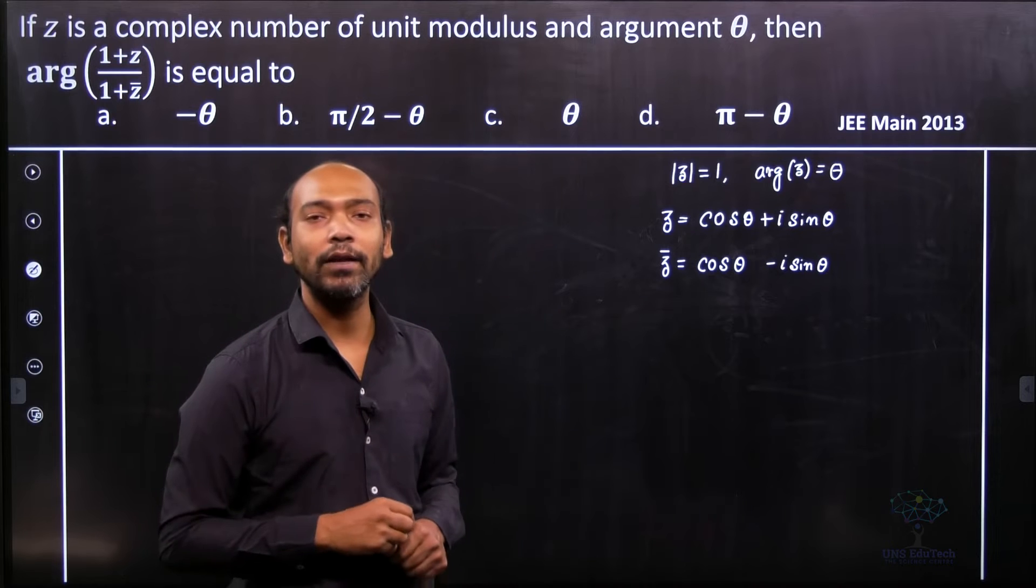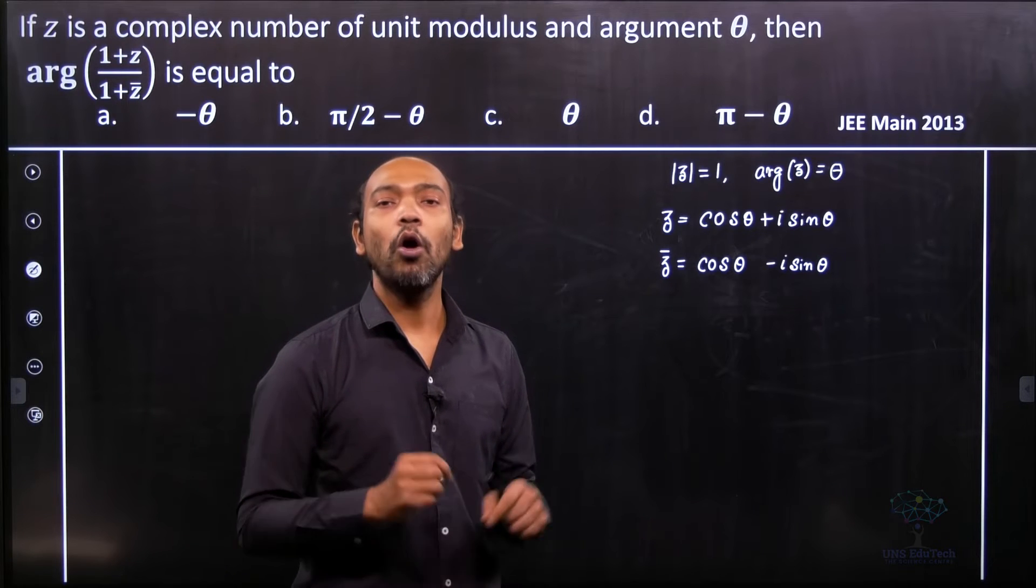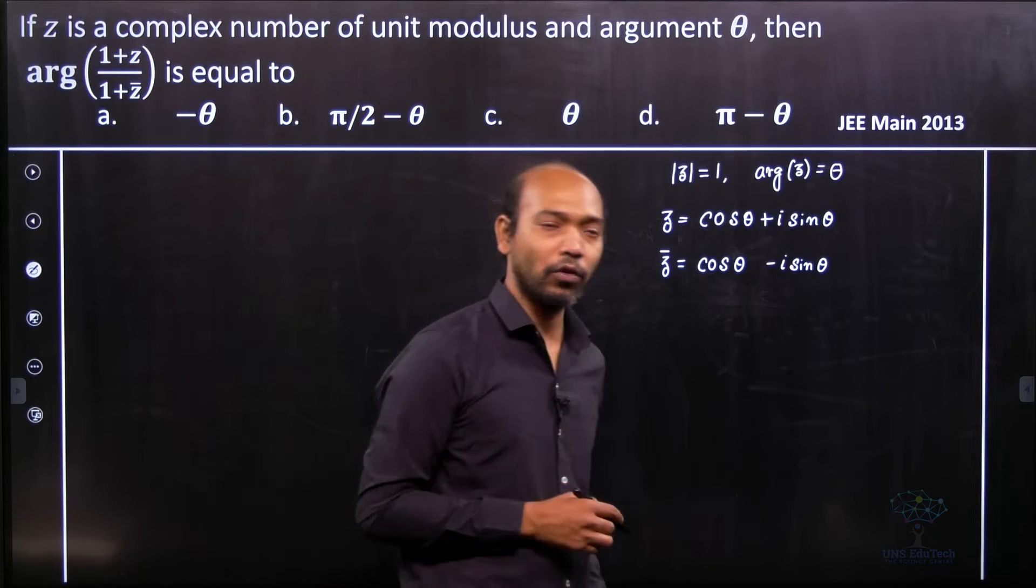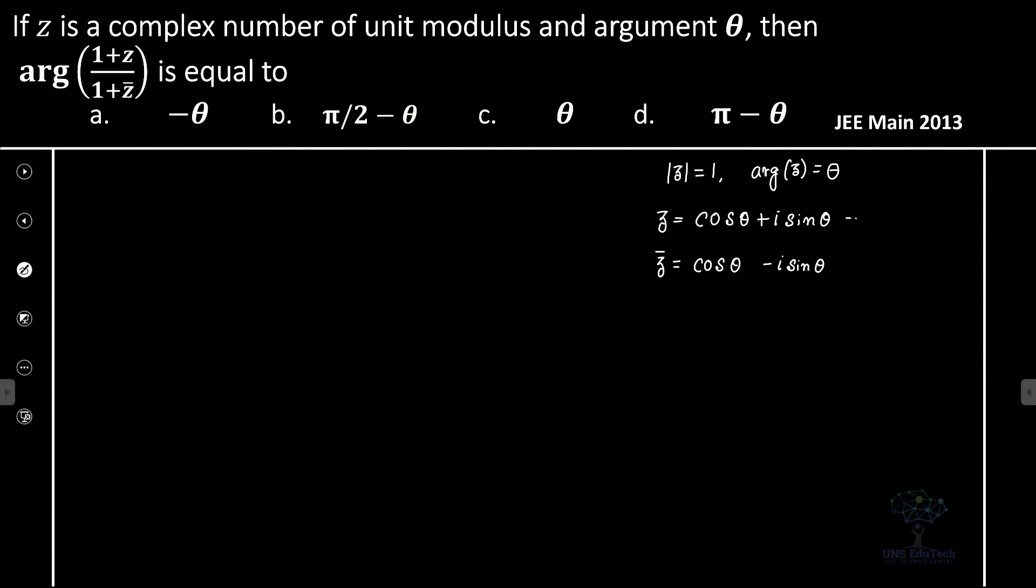So here we use the important formula in math that's called Euler representation of a complex number or the Euler formula. So we can say that this is e to the power i theta and therefore this is e to the power minus i theta.